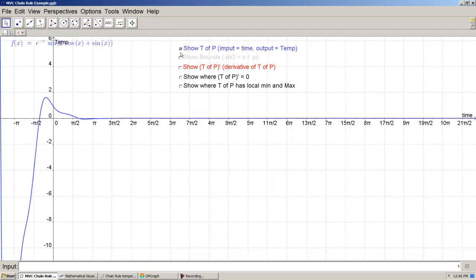I'm going to click this to show t of p. That's input time, output temperature. And there's the function. It's in blue. I want to show the bounds that we're looking for, negative pi over two to pi. So let's look at those bounds.